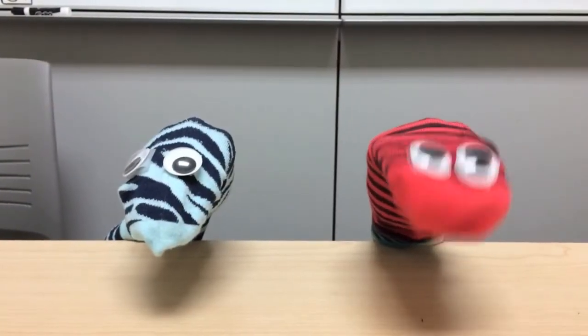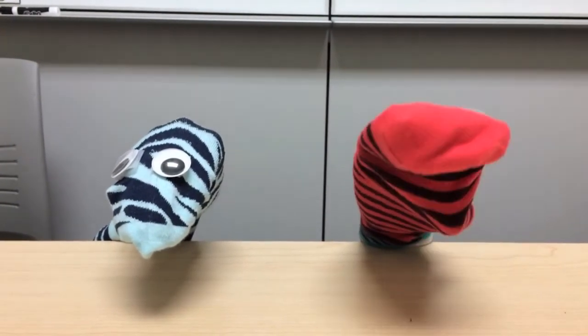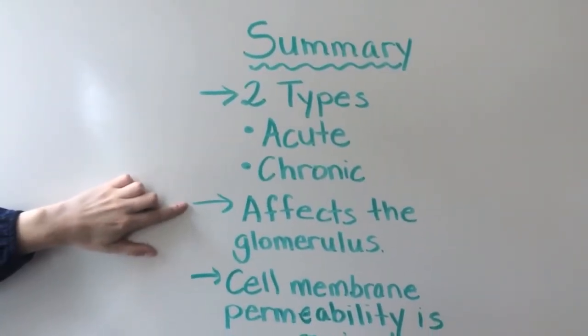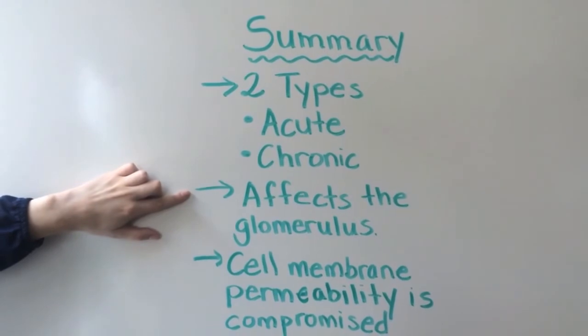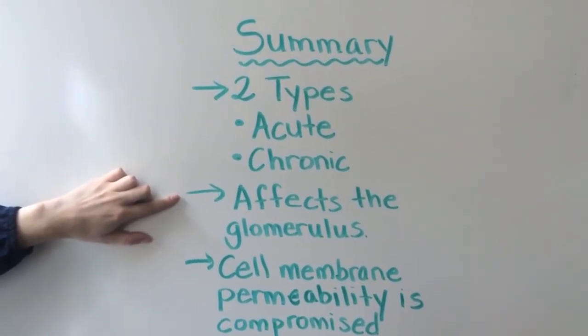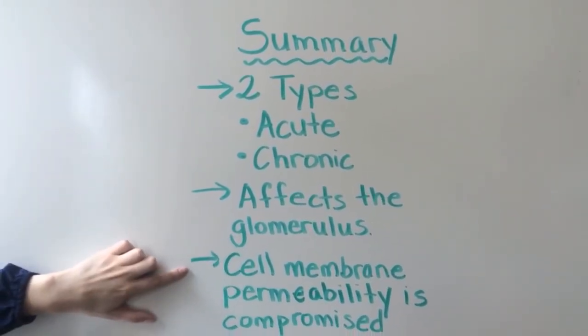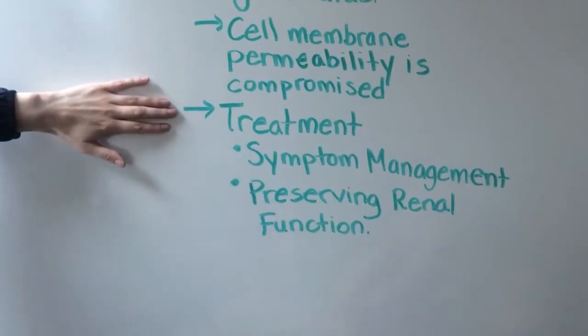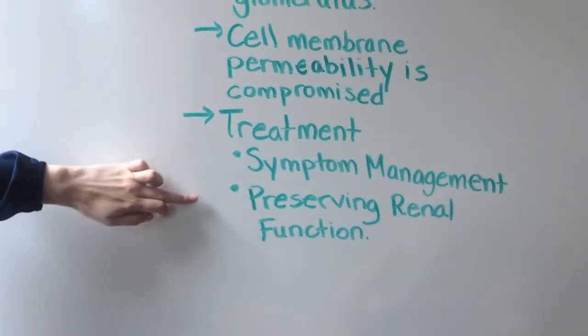Summary: there are two types of glomerulonephritis, acute and chronic. Glomerulonephritis is a disease which affects the glomerulus, which is the filtering part of the kidney located in the nephron. The body's ability to filter blood is compromised by the changing cell membrane permeability due to the damage caused by inflammation. The treatment is primarily focused on symptom management and preserving renal function.